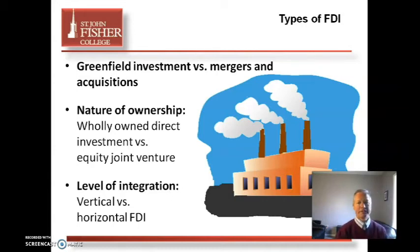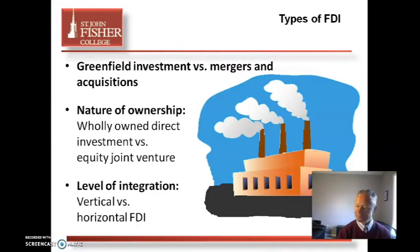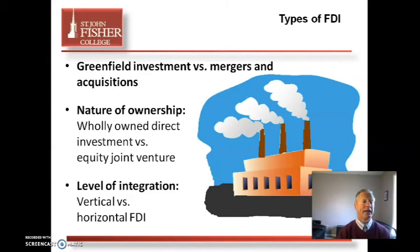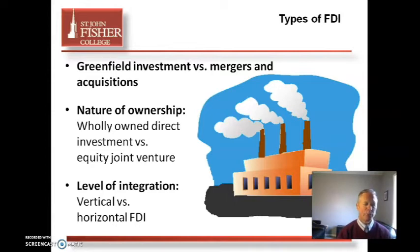The types of FDI: the first is greenfield investment versus mergers and acquisitions. A greenfield investment means you're going to build your own plant. A merger means you're combining with another company — like Compaq and HP did. An acquisition would be Lenovo purchasing the IBM ThinkPad. Those are all different types of FDI.